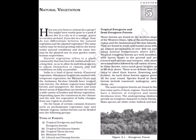Tropical evergreen forests are well stratified with layers closer to the ground and are covered with shrubs and creepers, with short-structured trees followed by tall variety of trees. In these forests, trees reach great heights up to 60 meters or above. There is no definite time for trees to shed their leaves, flowering and fruitation. As such, these forests appear green all the year round. Species found in these forests include rosewood, mahogany, ebony, etc.